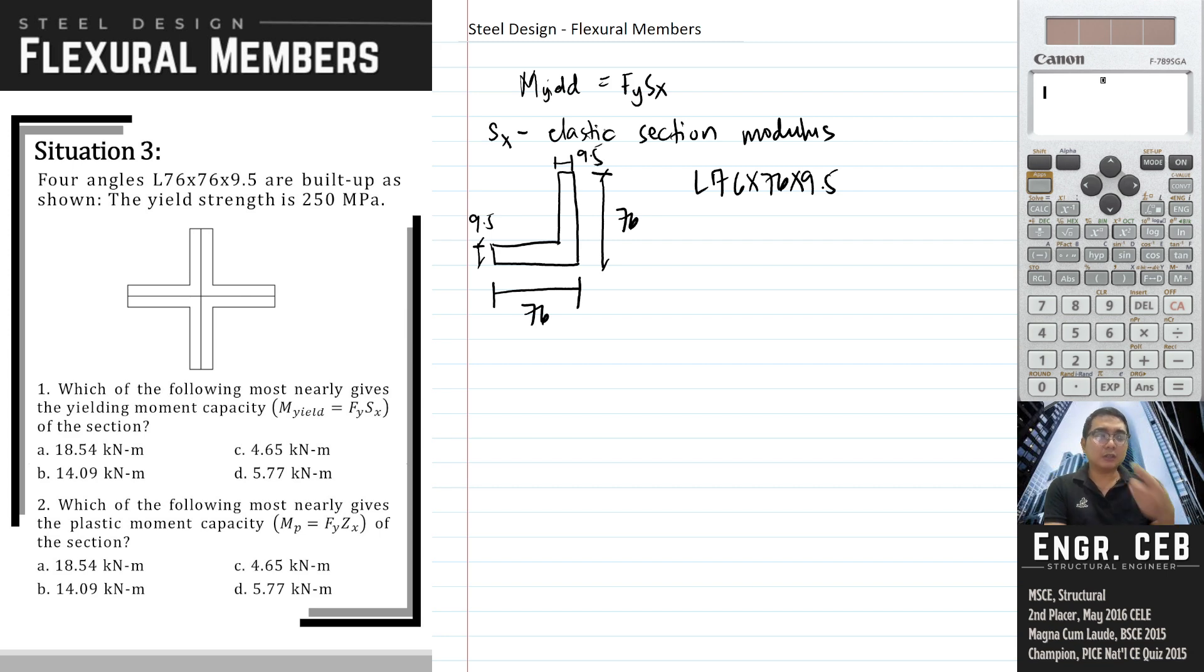If we're going to indicate the dimensions of the built-up section, I will draw the built-up section. This is 76, and then this is also 76. This is also 76.